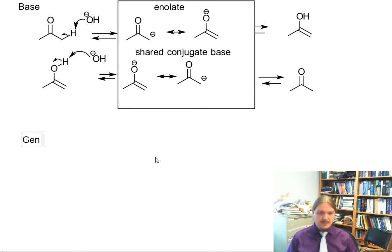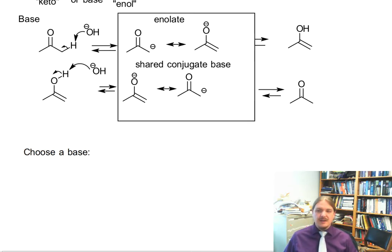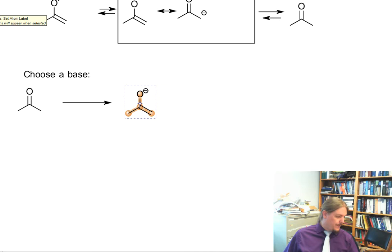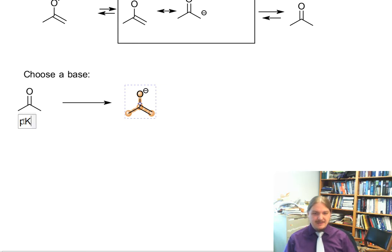In this video, I'm going to talk about choosing a base to generate an enolate. Since I'm talking about acetone, if I wanted to generate the enolate anion of acetone, it's worth noting that the enolate is often represented in this resonance form and not in the other resonance form, the carbanion resonance form.